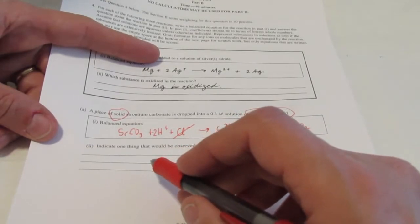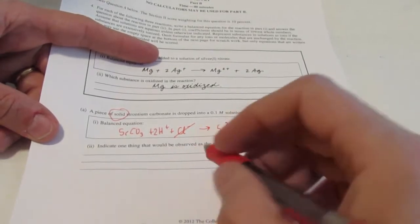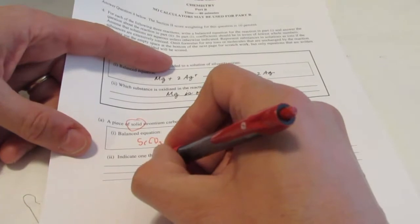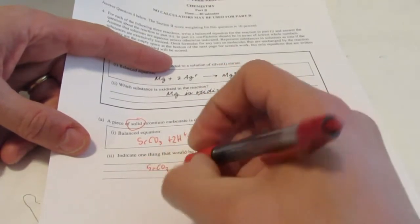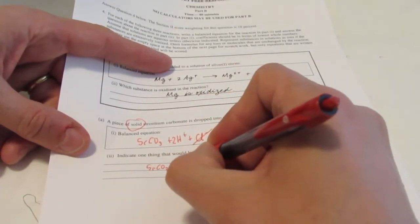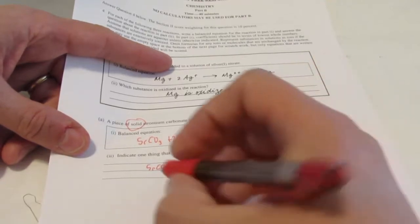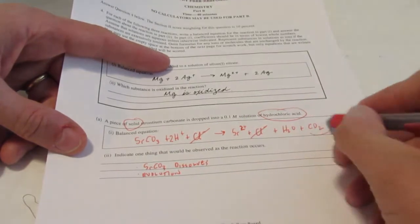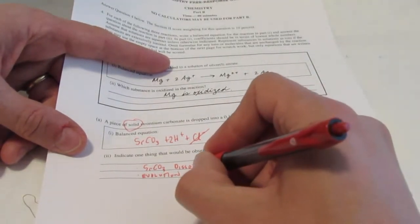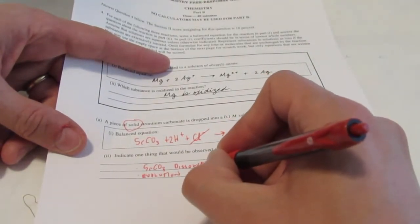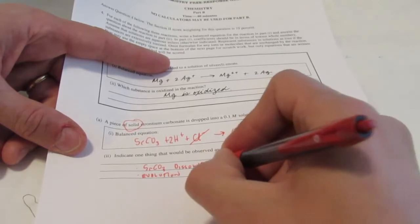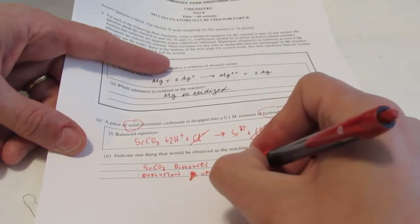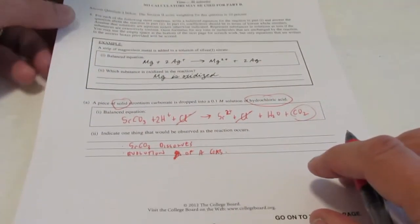Indicate one thing that you would observe during the reaction. Well, first of all, this strontium carbonate I would expect to dissolve, right? Its mass would get smaller, and I would see the evolution of a gas. It would bubble because I'm making carbon dioxide. So, evolution of a gas. I might be able to pick up my fifth point.